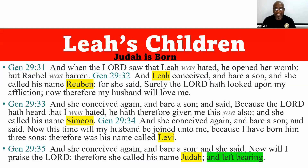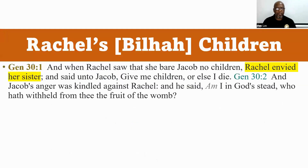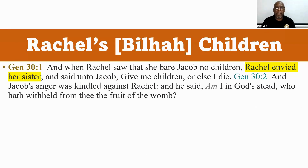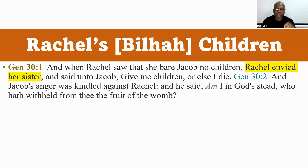So when the Bible said she left off bearing — she stopped having children — that's a foregone conclusion. Now when Rachel saw that she bore Jacob no children, she envied her sister. Rachel is the one that Jacob loved, but she did not have any children, so she envied her sister. And she said unto Jacob, 'You need to give me children or else I'm going to die. You need to get some children for me.'